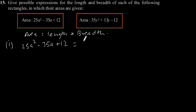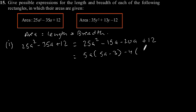This can be written as 25a² - 15a - 20a + 12. This is equal to 5a(5a - 3) - 4(5a - 3). This is equal to (5a - 3)(5a - 4).